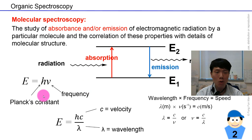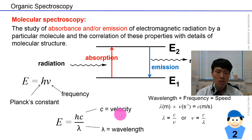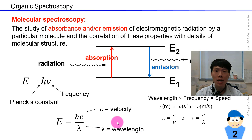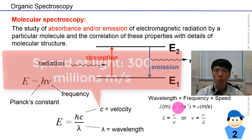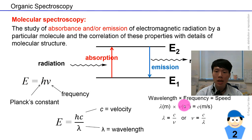There are some equations to define how we calculate this amount of energy. E stands for energy; it is the product of Planck's constant and the frequency of the light source. The energy can also be defined as the product of Planck's constant and the velocity of light — the speed of light is 3×10⁸ meters per second — divided by the wavelength of the light. The correlation between frequency and wavelength: their product gives you the speed of light.